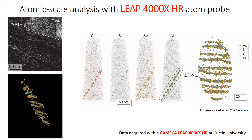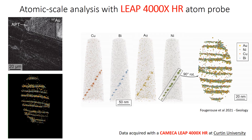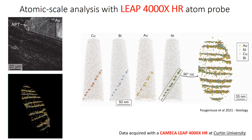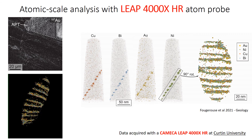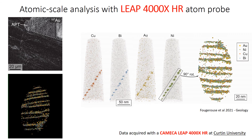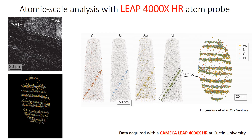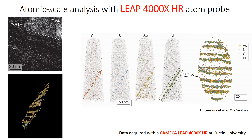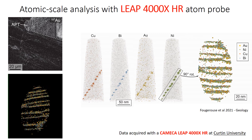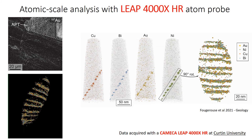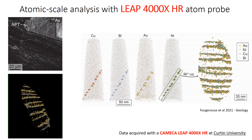What we see in this atom probe data is that the low angle boundary is composed of several aligned linear features which are enriched in copper, bismuth, nickel, and gold. These features are typically called dislocations, and the gold they contain represents a new type of invisible gold in pyrite.